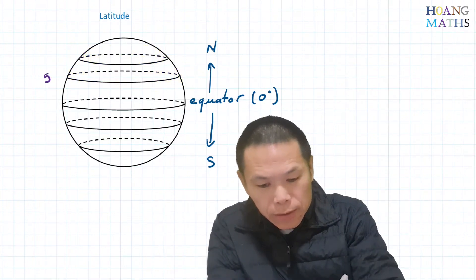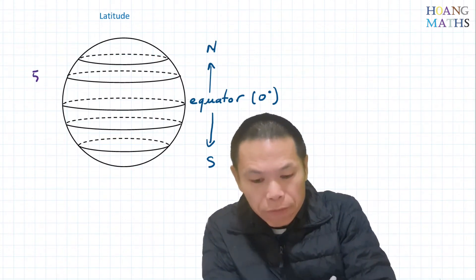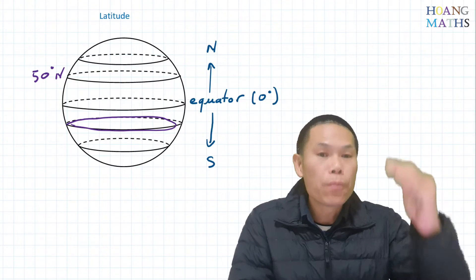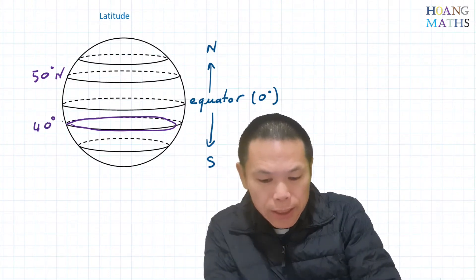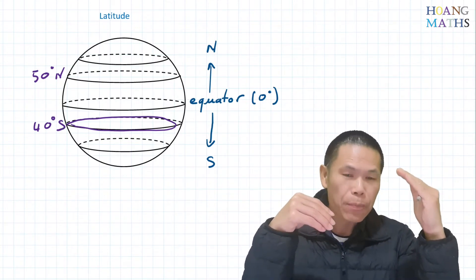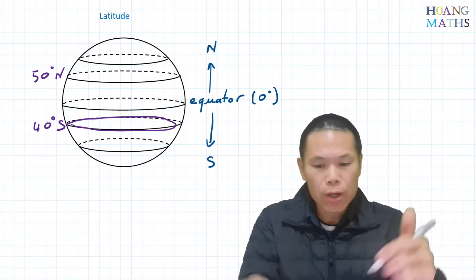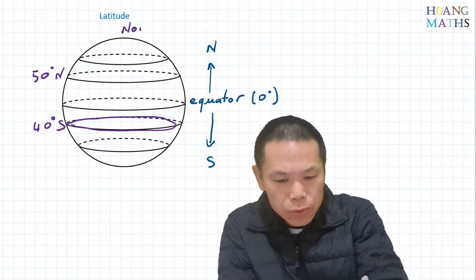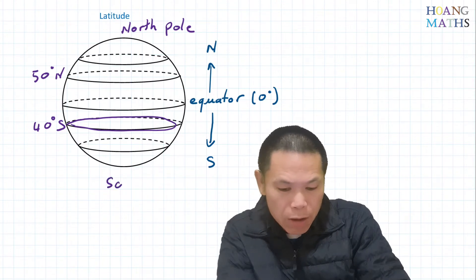For example, if this is 50 degrees above the equator, it will be 50 degrees north. And if this small circle here is 40 degrees below the equator, that will be 40 degrees south. If above the equator we say north, if below the equator we say south. Up here is the north pole, and down at the bottom here is the south pole.